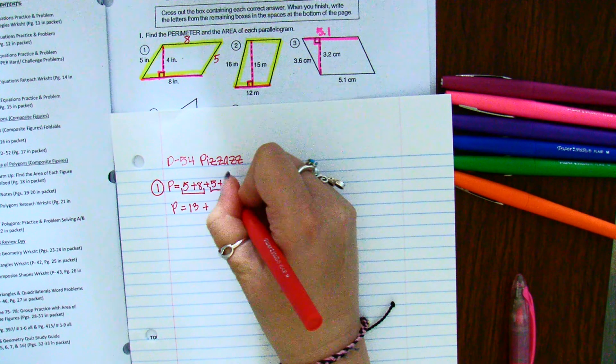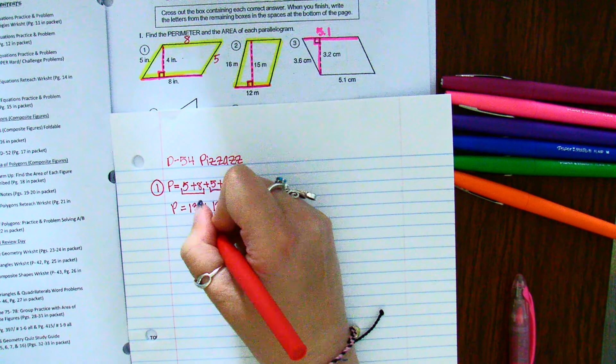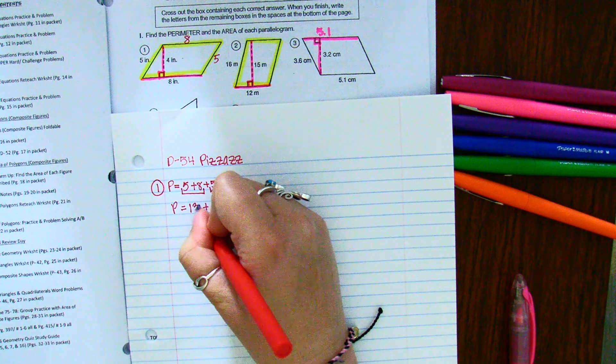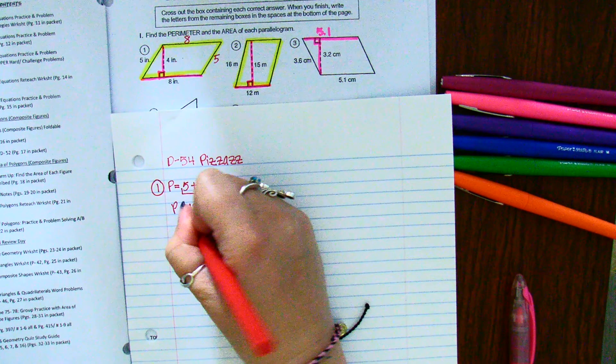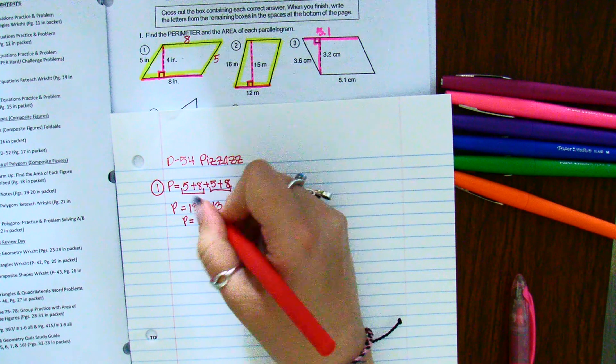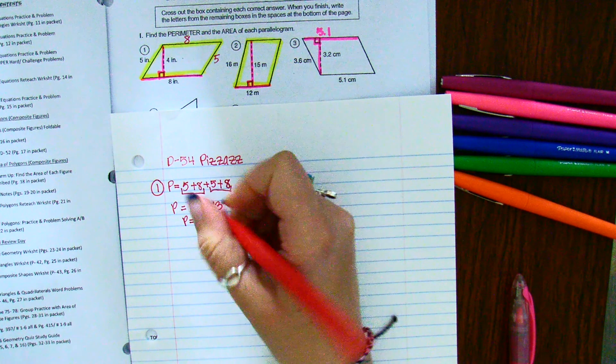And this five and eight also makes 13. Add those together. And you get my perimeter is 26. My units were inches, so I'm going to put inches for my perimeter.